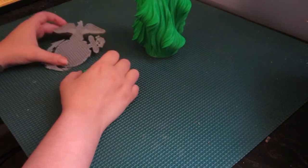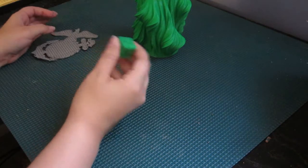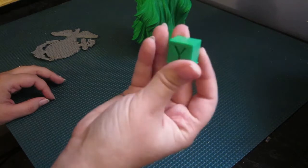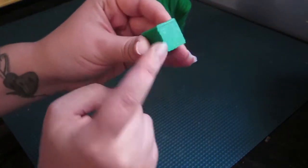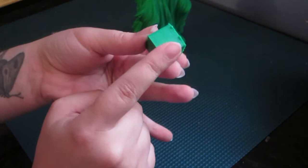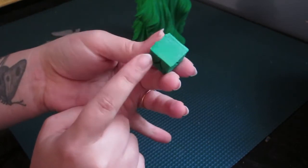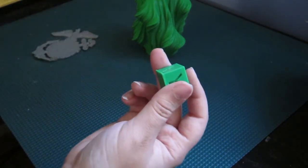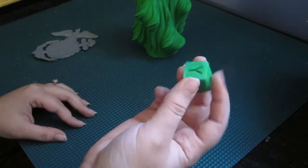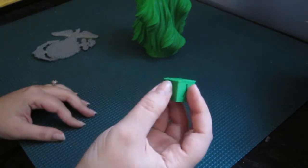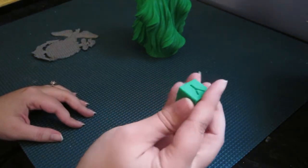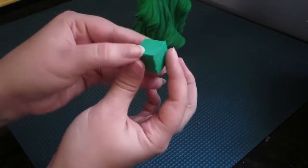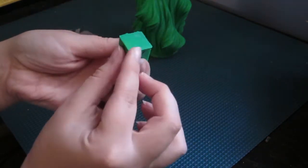This was the very first print that I had ever done. It's just a calibration cube. As you can see at the bottom, it has a little bit of elephant foot. Essentially that's just because the Z offset was set so it was too close to the bed. When I went in and adjusted the Z offset, that definitely helped.